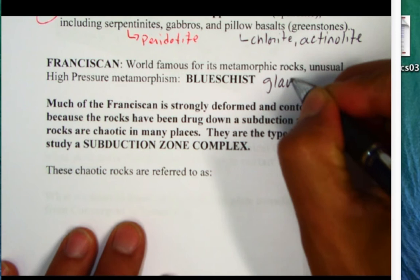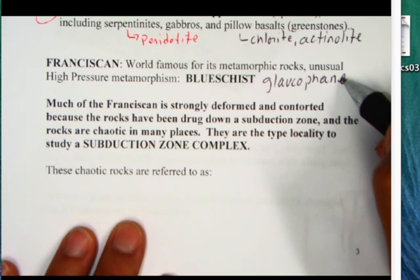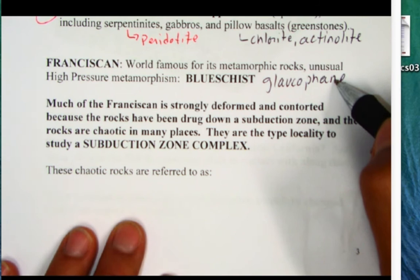Remember the blue schist has a characteristic glaucophane and glaucophane is like actinolite. Both of these are amphiboles but that's a green amphibole, this is a blue amphibole and this blue amphibole is typical of high pressure zones.